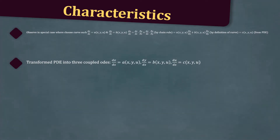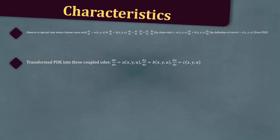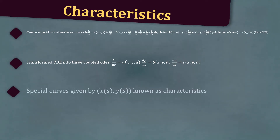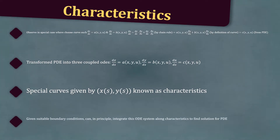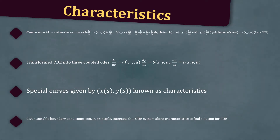The three coupled ODEs are: dx/ds equals a(x, y, u); dy/ds equals b(x, y, u); and du/ds equals c(x, y, u). The special curves given by x(s), y(s) are known as characteristics. Given suitable boundary conditions, we can in principle integrate this ODE system along the characteristics to find the solution for the PDE.